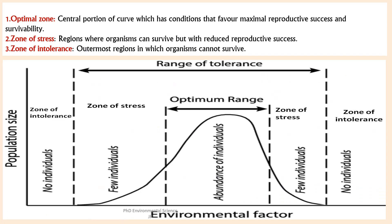This image illustrates the concept of Shelford's law of tolerance. On the x-axis you can see the environmental factor, which represents a gradient of a specific environmental variable — for example, temperature, pH, light, or moisture — affecting the species. On the y-axis you can see population size, which indicates the number of individuals of a species within a given population.